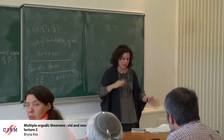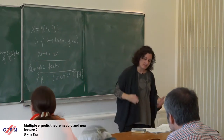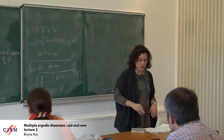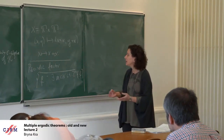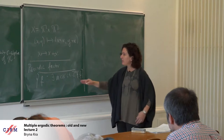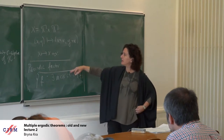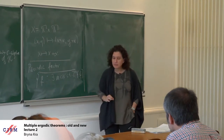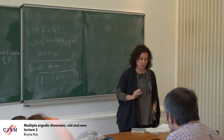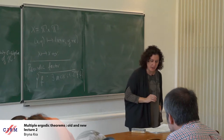More generally, the Kronecker factor can be viewed as the almost periodic factor, and it contains all of these. As was also pointed out in the last lecture — the structure versus randomness — the opposite of the Kronecker factor is randomness, weakly mixing.